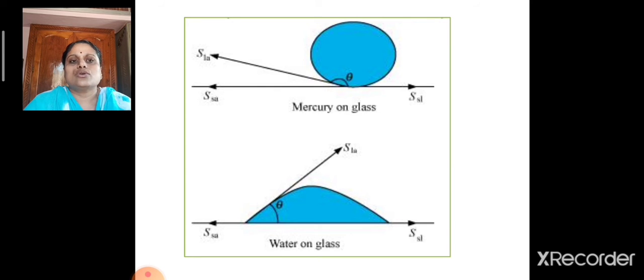Comparing the mercury on glass and water on glass, we can see that angle of contact is acute for water and it is obtuse for mercury.